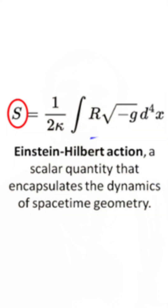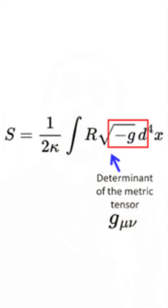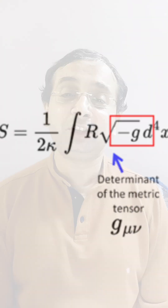Einstein Hilbert action is basically based on what is called the action principle, and it has something called S, which is a scalar quantity, and it makes the equation much easier. Einstein Hilbert action has a lot of concepts including what is called a differential volume. It has the square root of minus g. Well, square root of minus anything would be an imaginary number — so how did this imaginary number finally turn into what is called a real number?